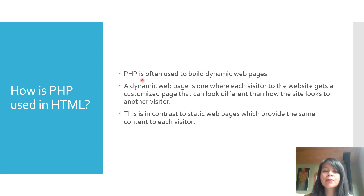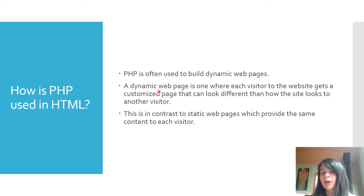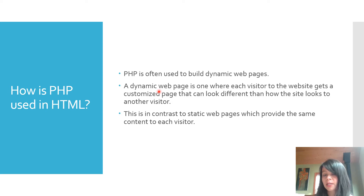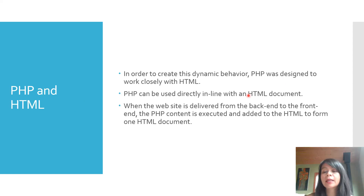So how is PHP used in HTML? PHP is often used to build dynamic web pages — that's why it's used in CMS. A dynamic web page is where each visitor to the website gets a customized page that looks different than how the site looks to another visitor, in contrast to static web pages, which provide the same content to every visitor.